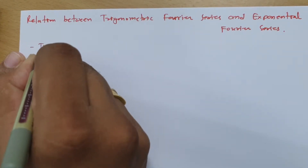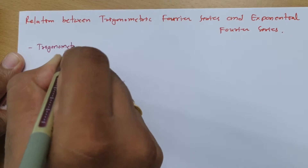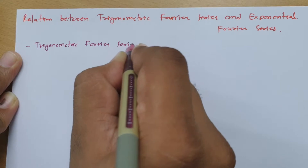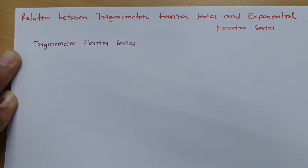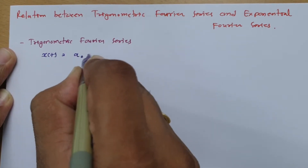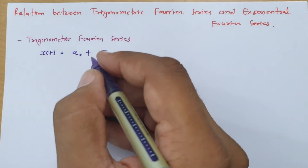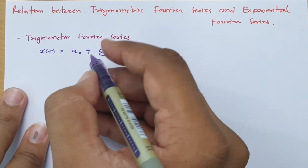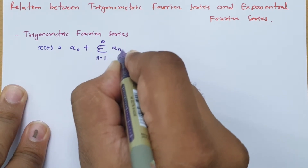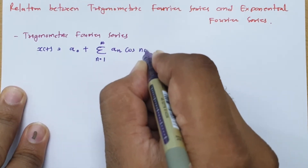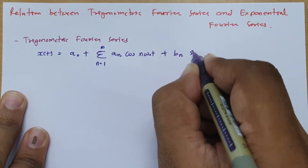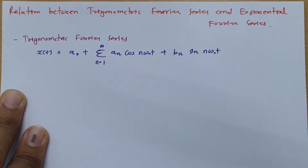We have already seen trigonometric Fourier series, and that is: x(t) = a0 + summation from n = 1 to infinity of an·cos(n·omega_0·t) + bn·sin(n·omega_0·t).